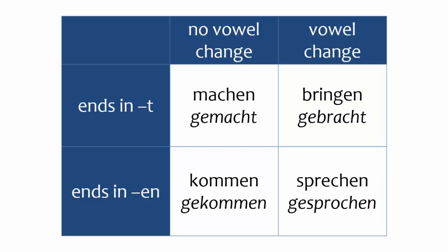As it turns out, there are four basic categories of past participles. A good way to conceptualize these four categories is with the table you see here. Most participles fall into the upper left category — like MACHEN, whose participle is GEMACHT. The past participles in this group feature a T at the end and have no spelling change.